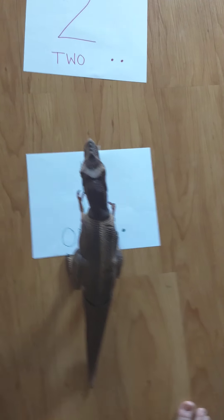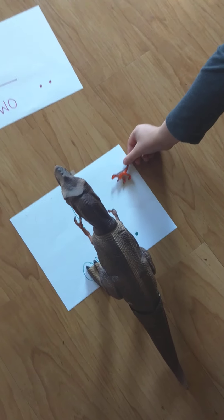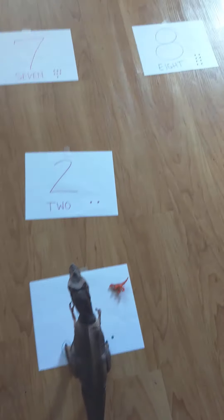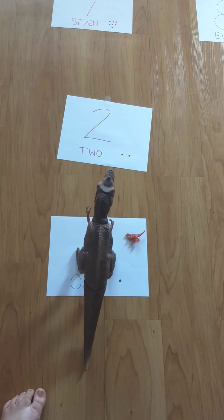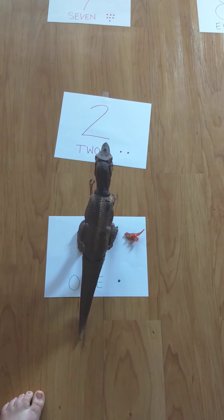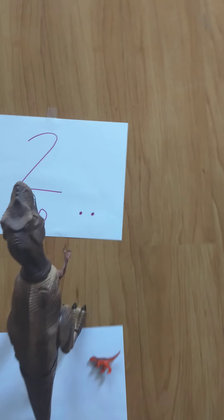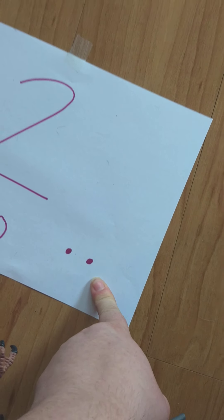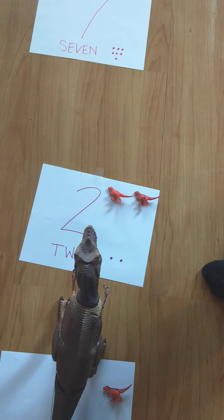My dinosaur found number 1. Alright, Carson, can you put down one dinosaur? One. Alright, now let's find number 2. Alright, so how many dinosaurs go there? Let's see. 1, 2. 1, 2.